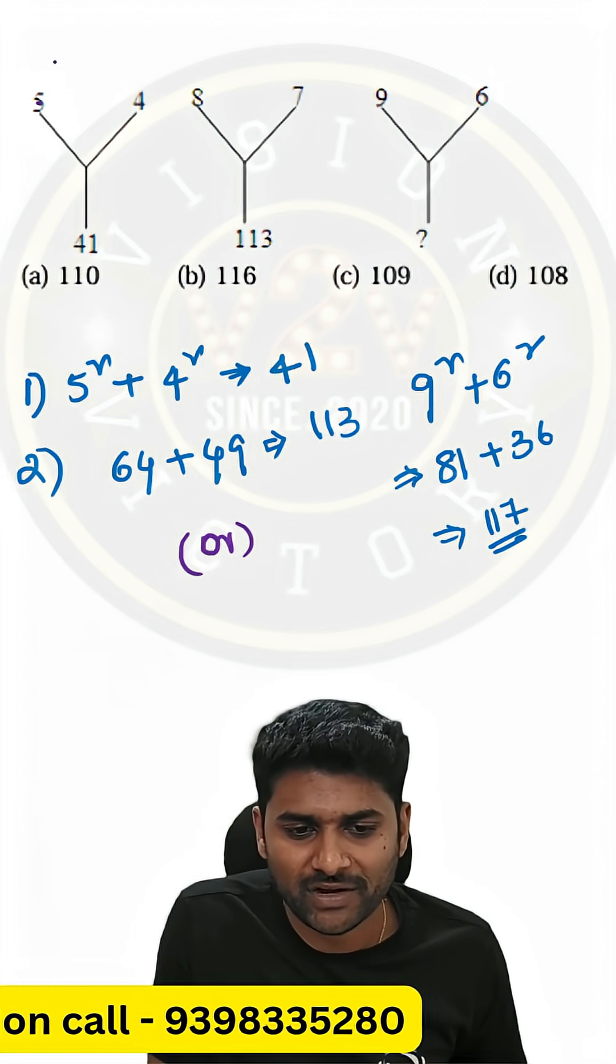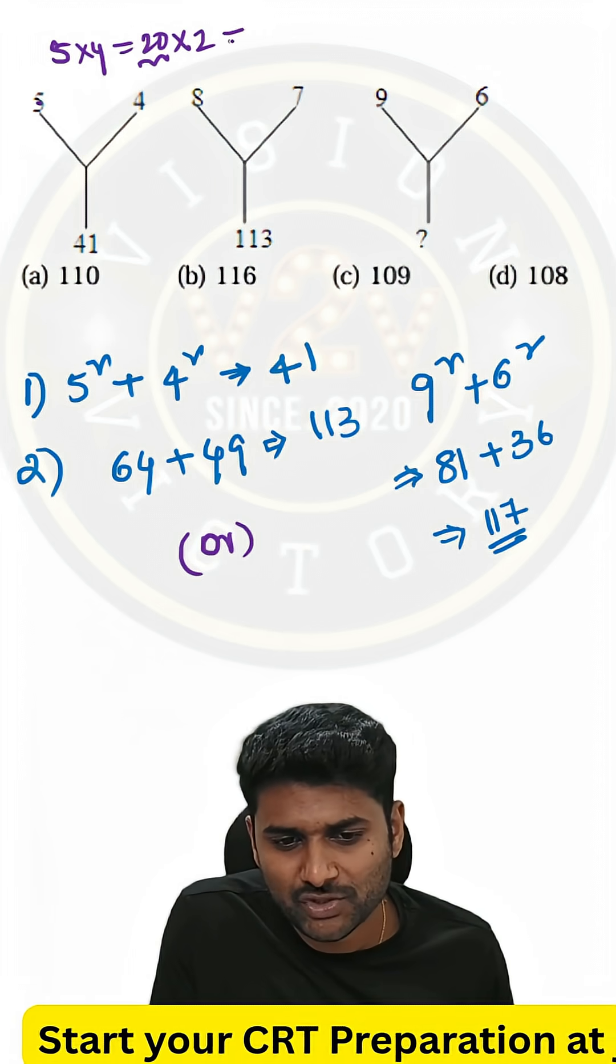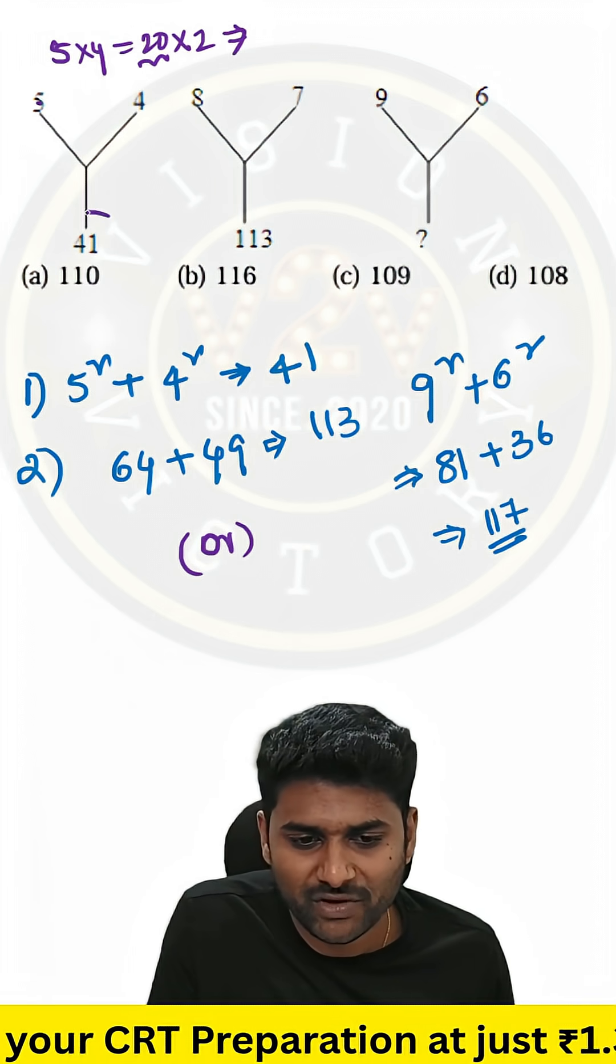Let's understand this method. 5 into 4, 20. If you again double it, so 20 into 2, 40 plus 1 is 41.